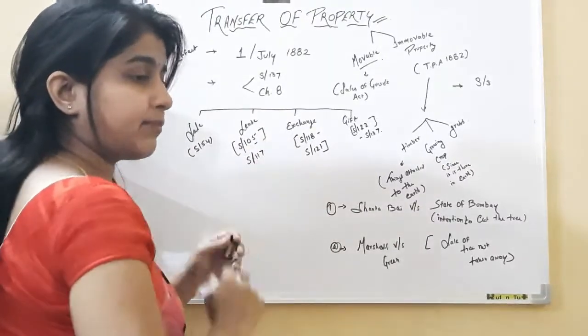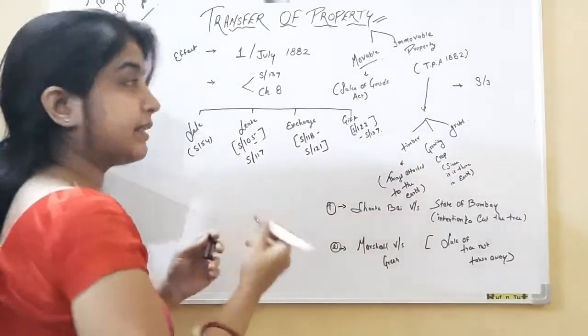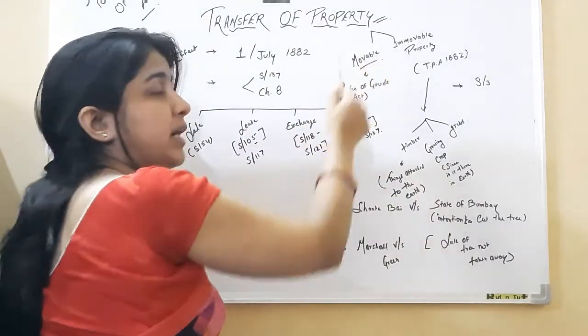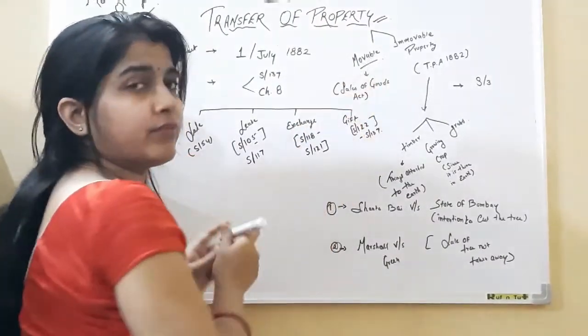Transfer of Property Act means property from one person to another person. Now the word property will be divided into two parts, movable and immovable property.